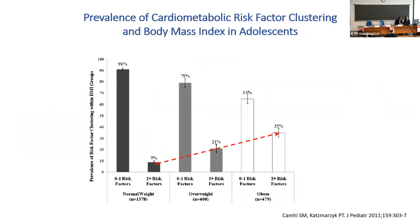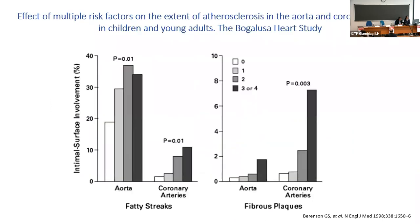Interestingly, if you look at this slide, you can see that the number of cardiovascular risk factors increases with the BMI of adolescents. In other words, 35% of these adolescents have at least two cardiovascular risk factors. Increasing the number of cardiovascular risk factors is associated with anatomical damage to the vascular system — the aorta and coronary arteries are affected by this condition.